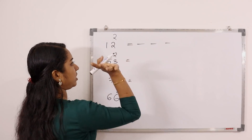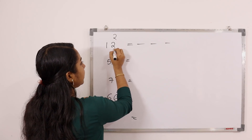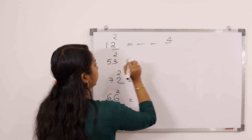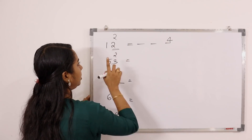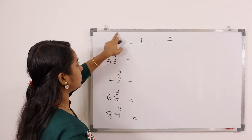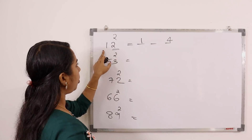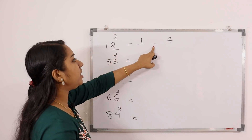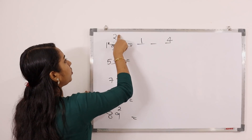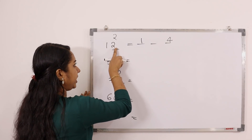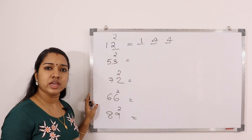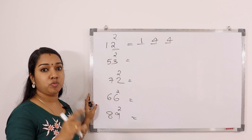We have a square called 12. That means we have two squares on this side. Where is the square? 4. One square is on this side. There is 2 square and 1 square. How do we find the number in the middle? This is 3.